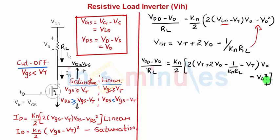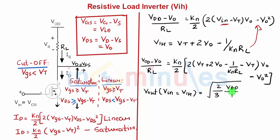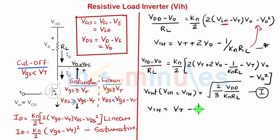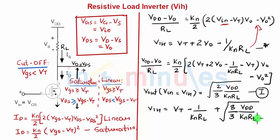Solving the quadratic gives two roots; the positive root is the desired result. So Vout when Vin = VIH is: Vout = (2/3)*VDD / (KN*RL). Substituting this back into Equation 2 gives the final result: VIH = VT - 1/(KN*RL) + (8/3)*VDD / (KN*RL).